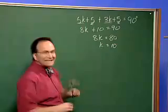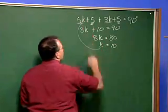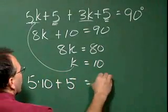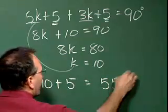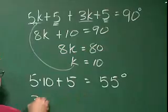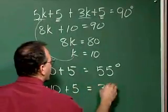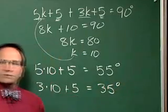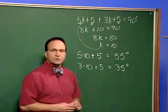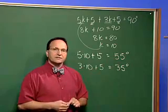So that's the value for k, but now what we need to do is actually calculate what each of the angles is by plugging k back in. So we have 5 times 10 plus 5, which gives me 55 degrees for the first angle. Then, we have 3 times 10 plus 5, and that adds up to 35 degrees, which of course we would expect because we knew that these were complementary, which is to say they added up to 90 degrees, and 55 and 35 gives us 90 degrees.